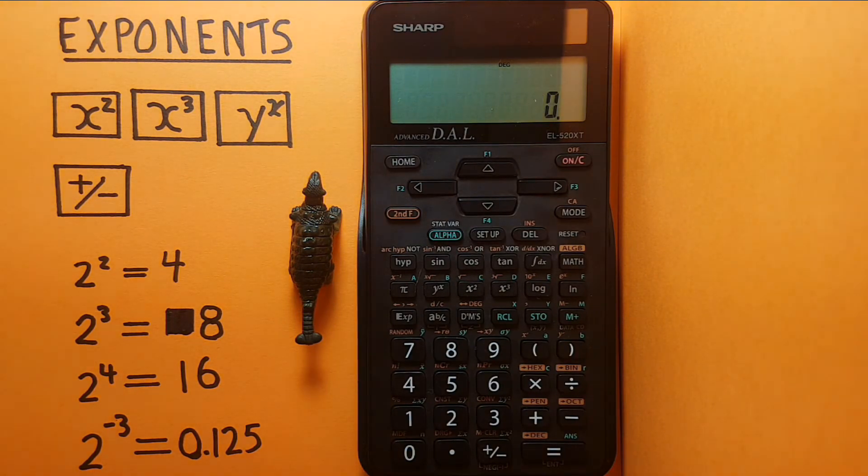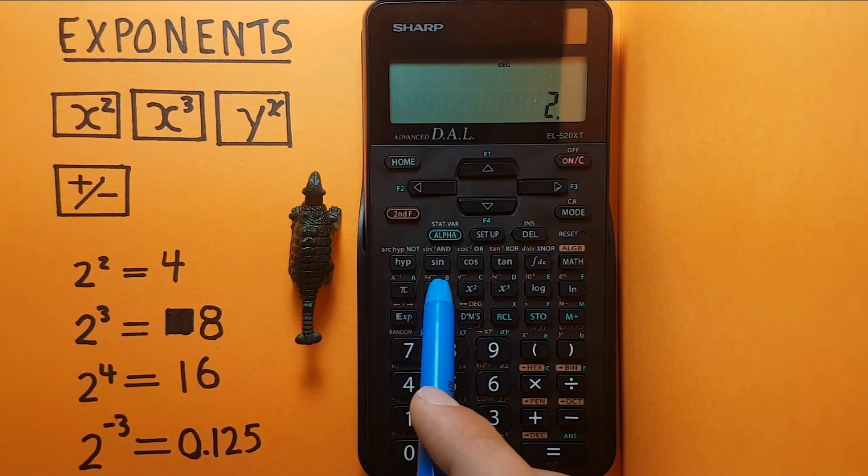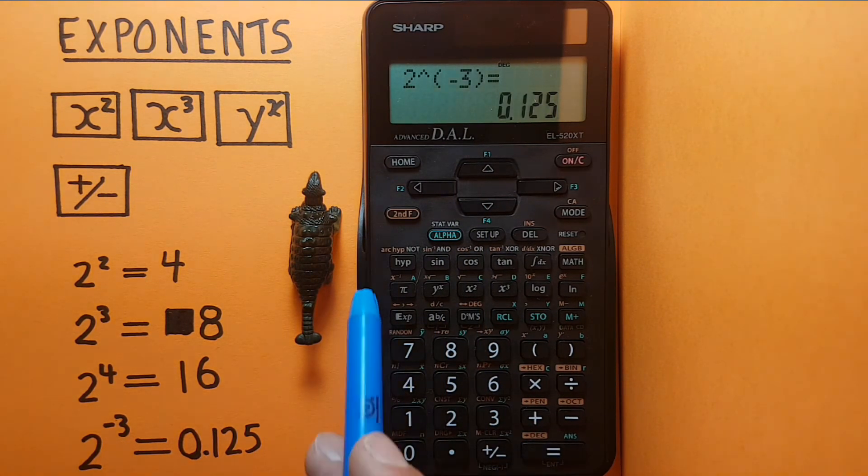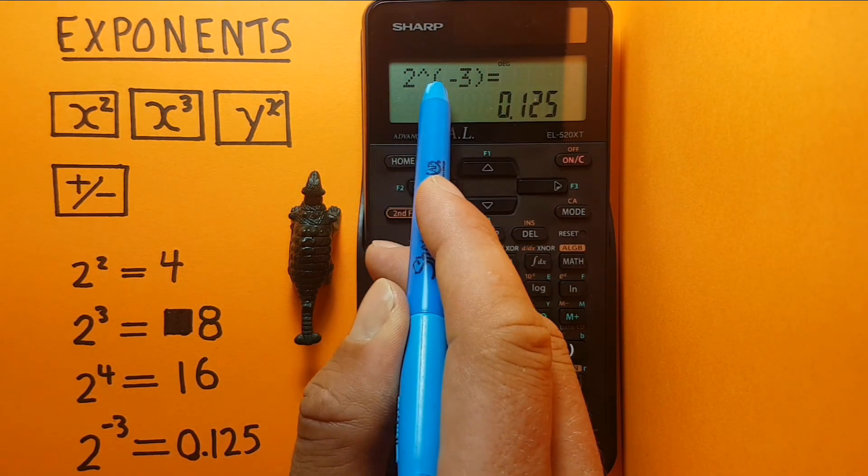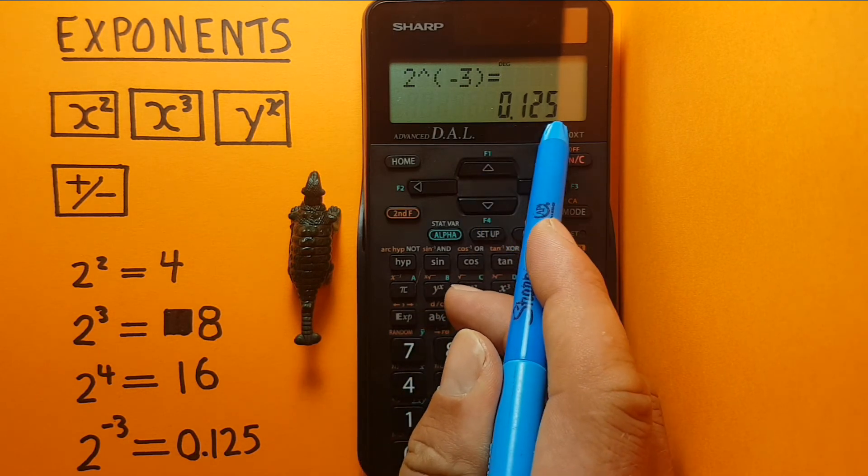We can also find negative exponents. So if we wanted to find 2 to the power of negative 3, we would enter 2, y to the x, then use the positive negative key, and then 3 equals. We see at the top of the screen, 2 to the power of negative 3 equals 0.125.